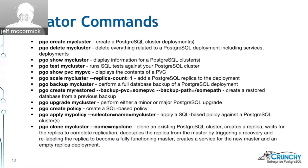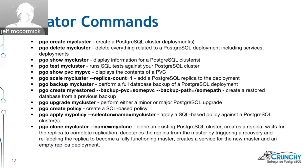`pgo create policy` creates a SQL-based policy with a name. This is useful for people who have a series of SQL statements to apply against databases — they can be security-related or application-related. You can then apply those policies to a series of clusters based on a selector criteria. For example, if you have a hundred Postgres databases and want to apply a specific security policy, you can run `pgo apply` against anything matching that selector. The operator catalogs which policies are applied to each cluster, so at any time you can see exactly where each cluster stands with regards to certain policies.